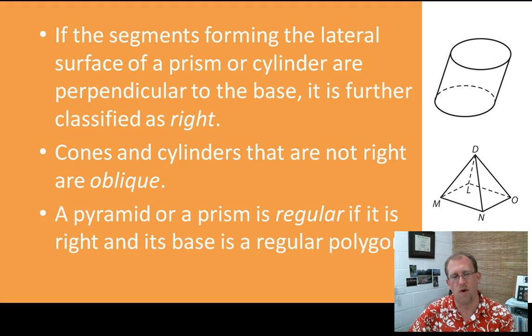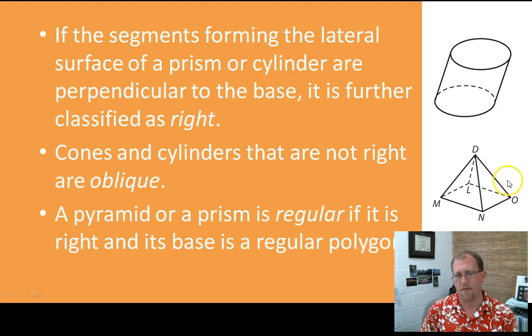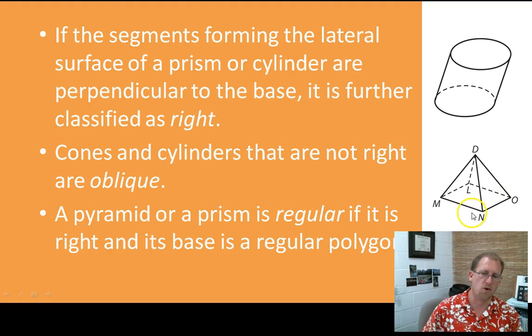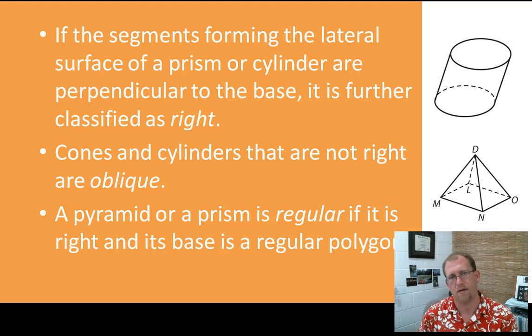A pyramid or a prism is regular if it is right and if its base is a regular polygon. So I don't know if this is a regular square, it doesn't look like it is, so this is not regular. But if this were a square, then this would be a regular square pyramid. So if you have a regular polygon, then it's a regular pyramid or a regular prism.